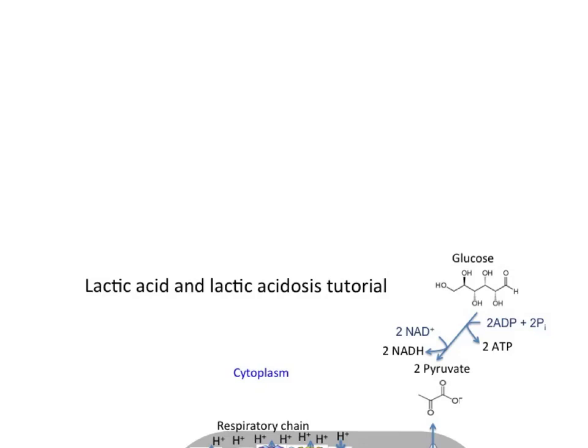In this tutorial, we'll talk about how lactic acid is produced and under what conditions large quantities of lactic acid are made in the body, resulting in lactic acidosis. I'm assuming that you're familiar with glycolysis, with the TCA or Krebs cycle, and the respiratory chain, and we'll only discuss those as they relate to lactic acid production. What you can see on the screen is a simplified version of glycolysis, where one molecule of 6-carbon glucose is converted to two molecules of the 3-carbon pyruvate.